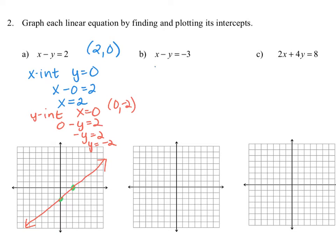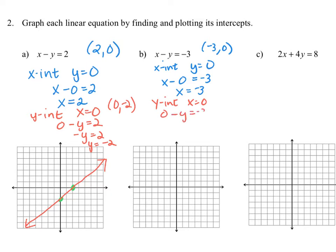Our x-intercept again occurs when y is equal to 0. Taking our original equation and replacing y with 0, we get x minus 0 is equal to negative 3, so x is equal to negative 3, corresponding to the point (negative 3, 0). The y-intercept occurs when x is equal to 0. Replacing x with 0 gives us negative y equals negative 3, or y is equal to positive 3, corresponding to (0, 3). We plot both points and connect them with a line, sketching our linear equation by plotting the x and y-intercepts.